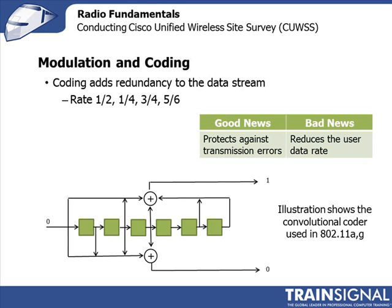If you're in really good RF conditions, you don't need as much redundancy. If you're close to the access point with a very good strong signal, maybe you can use a 5/6 coder — five information bits in, six bits out. If you're out on the edge of the cell getting a lot of errors, then you want to use a half-rate coder — one bit in, two bits out. This obviously affects your data rate: the more redundant bits you send, the lower your actual data rate. So as coding changes as you move around the cell, data rates will be lower at the edge and higher closer to the access point.